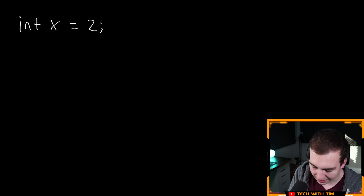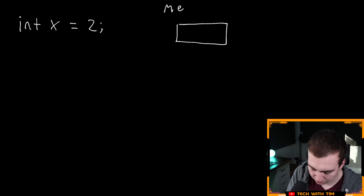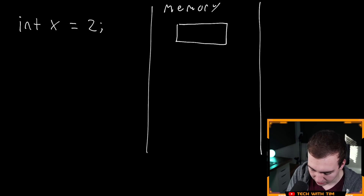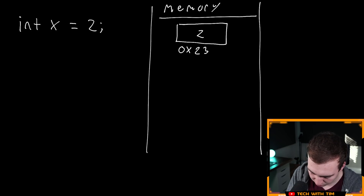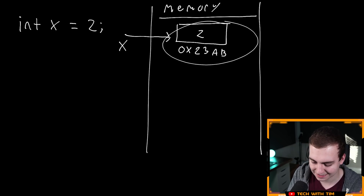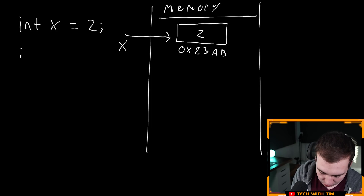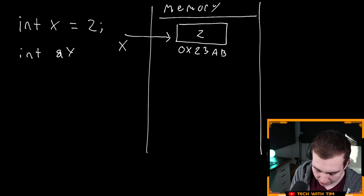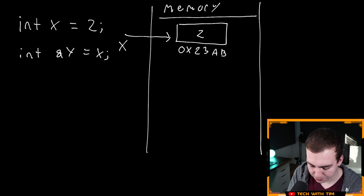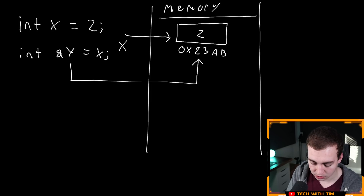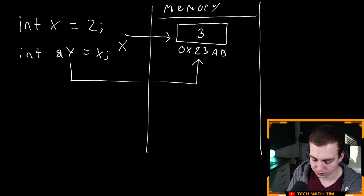If I create a variable — let's say we make X and we make that equal to two — what happens is we have this box that gets drawn in our computer's memory. This box has a two inside of it and has some memory address location, let's say 0x23AB or whatever. And then we have some label called X, so X allows us to access this box. Now when we create a reference — say int &Y = X — what happens is Y just points to this same box. So whenever we change the value of X or Y, we're really just changing whatever's in this box, and both of these variables are going to change because they're both pointing to the same thing. That is what a reference does.